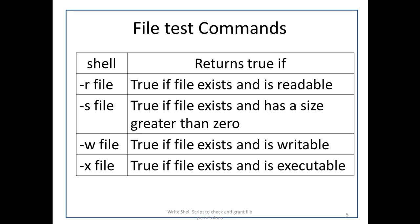When we use the -r filename option in the if statement for condition checking, it will give true if the file exists and has readable permission. The -s filename option is true if the file exists and has a size greater than 0. The -w filename option is true if the file exists and has writable permission. The -x filename option is true if the file exists and is executable.